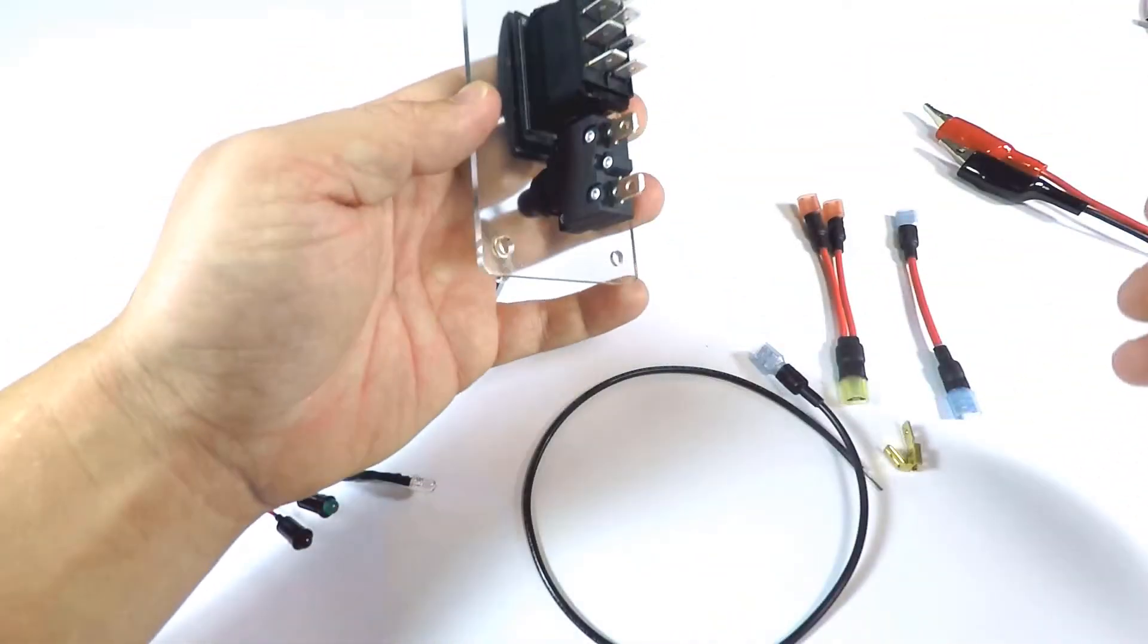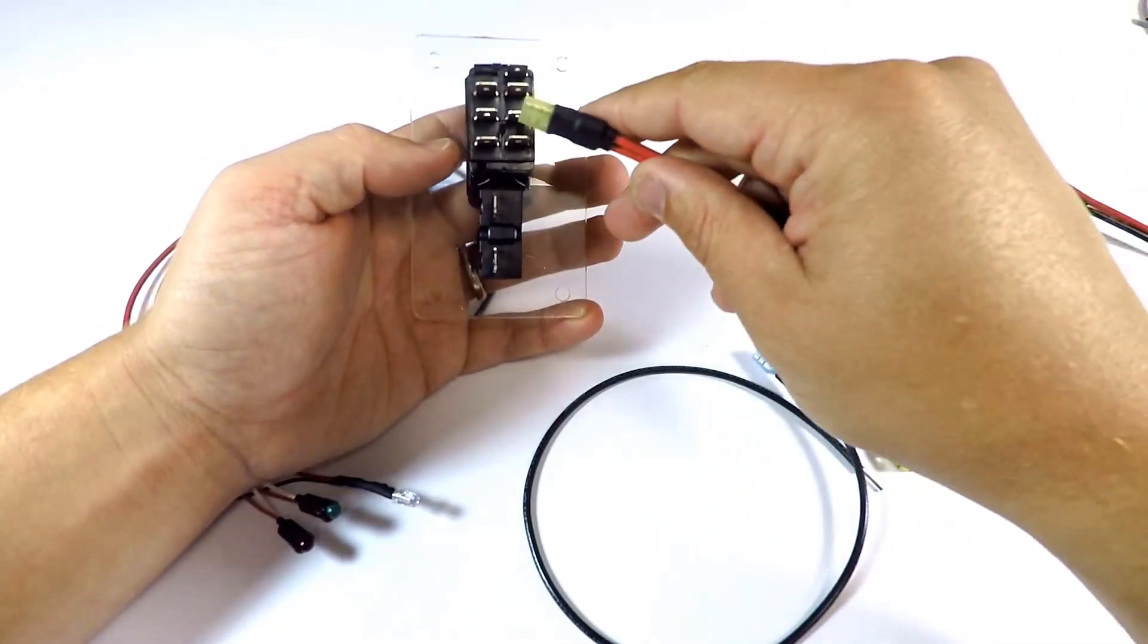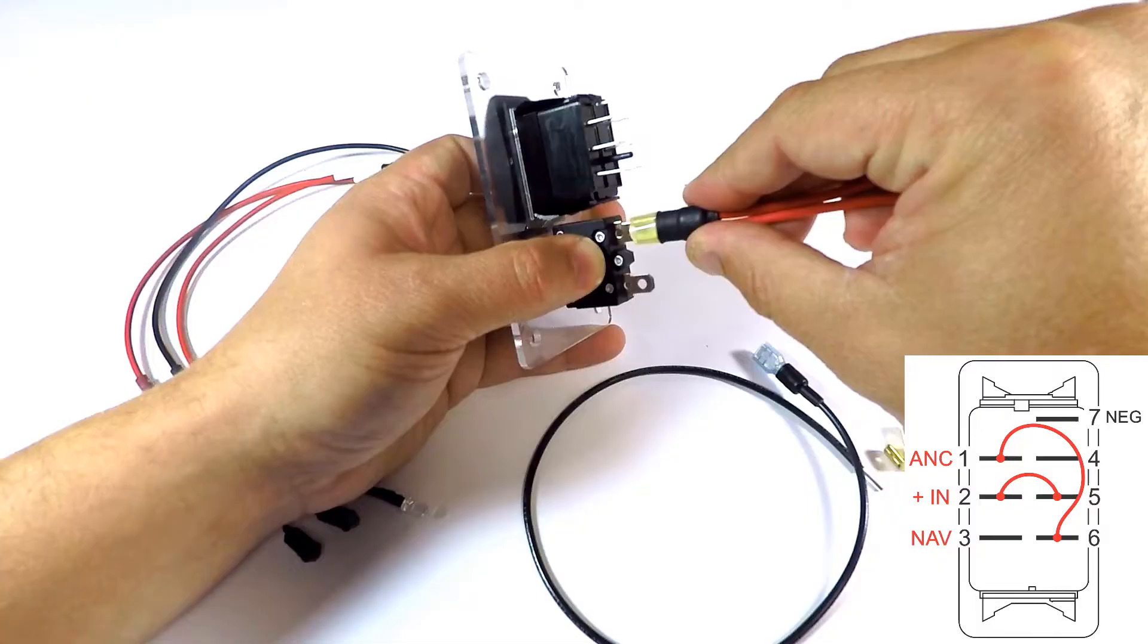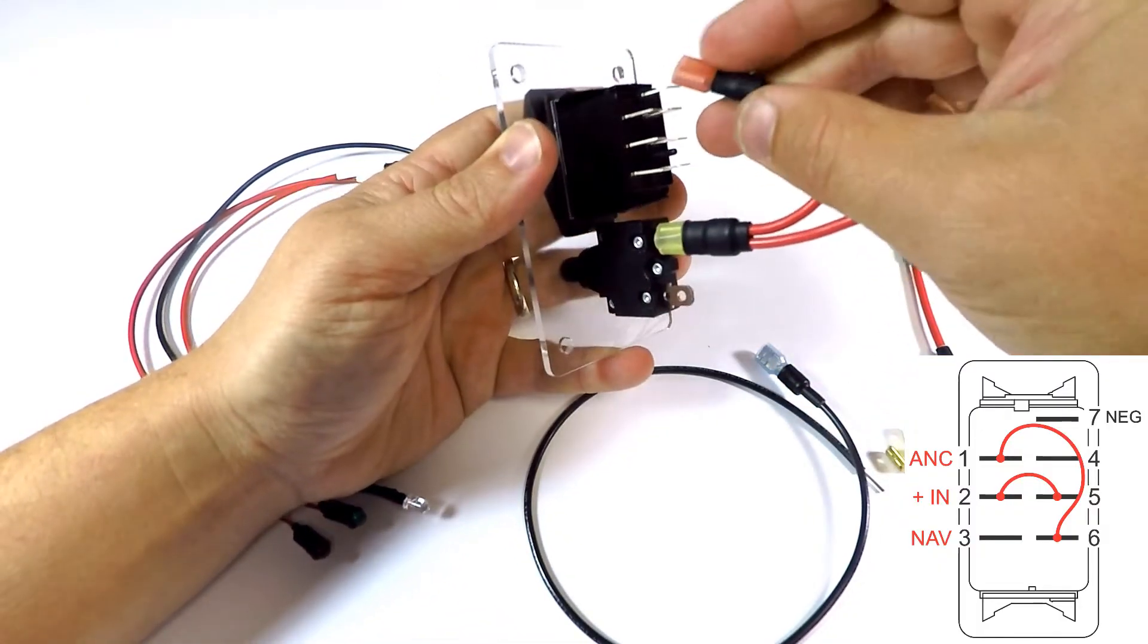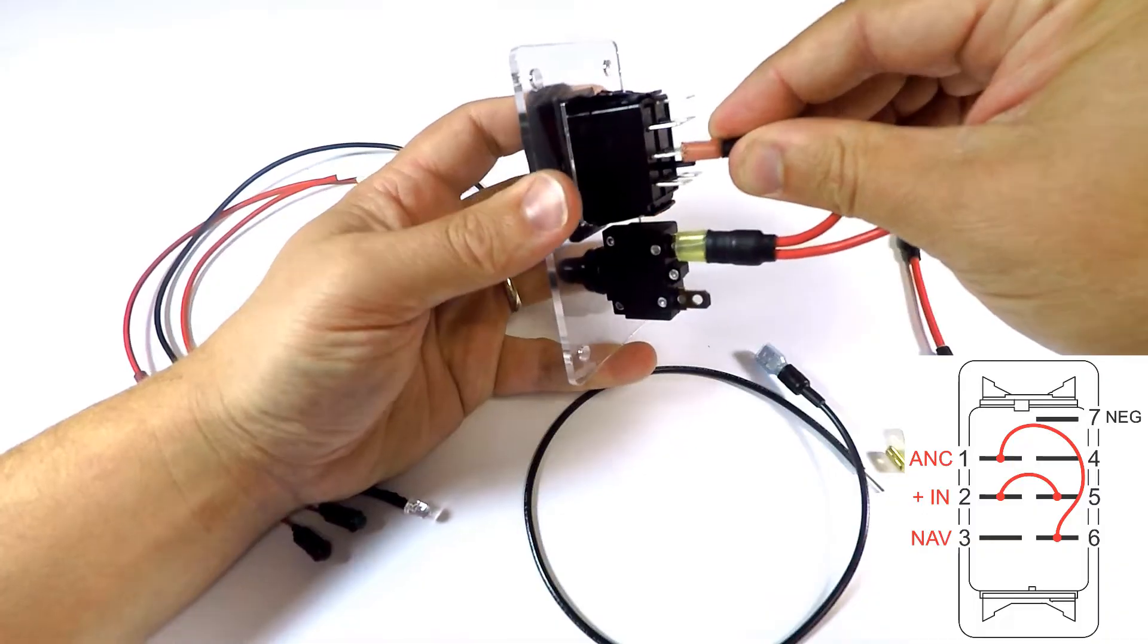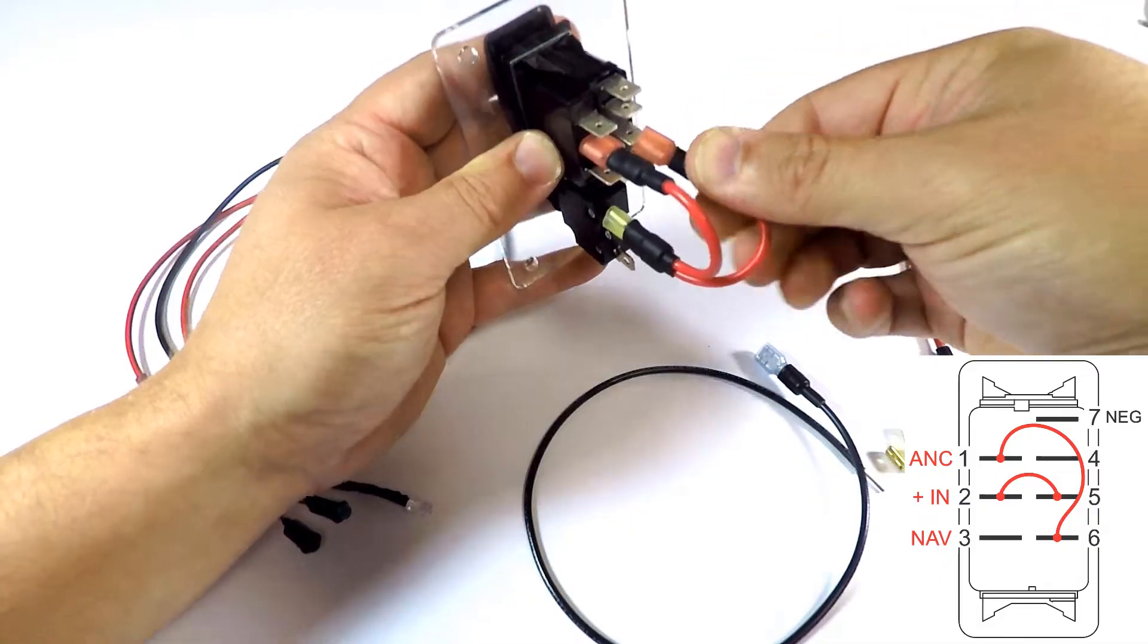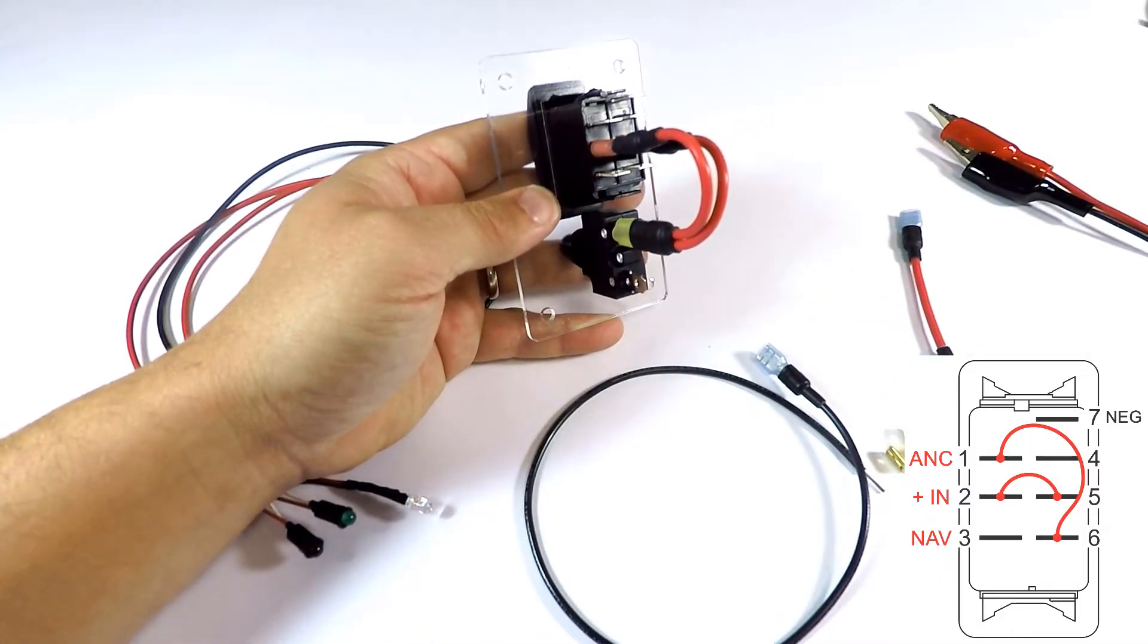All right, now let's go back to our example switch. We need to bring power into terminals 2 and 5. We'll use this special jumper we've made with three terminals. We'll put the double terminal on the breaker and use the single terminals to go up to terminals 2 and 5 on the switch. This uses a lot less space on the back of the switch and allows you more room for other jumpers that will come in next.